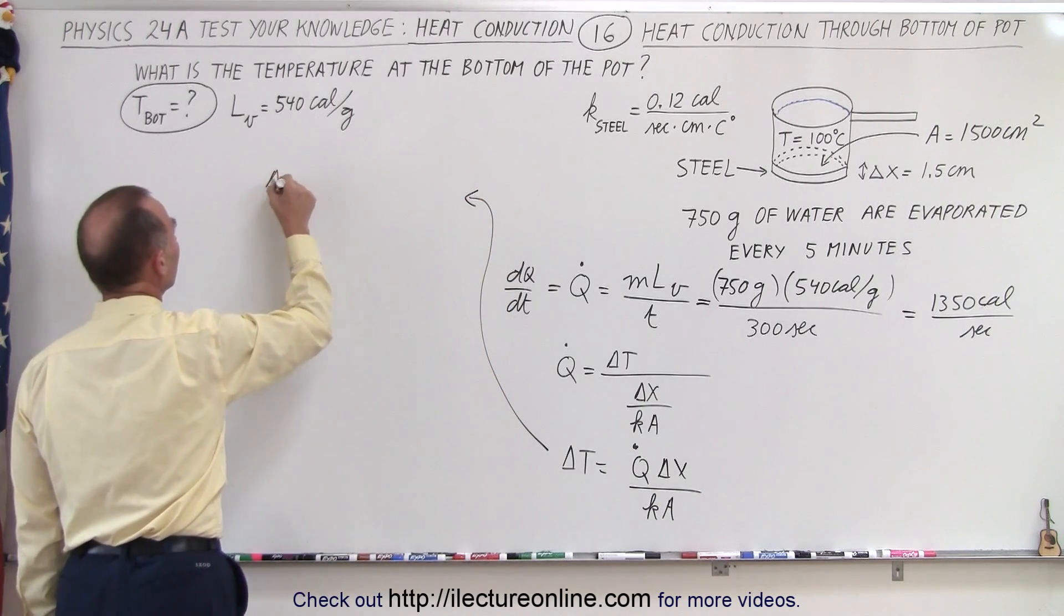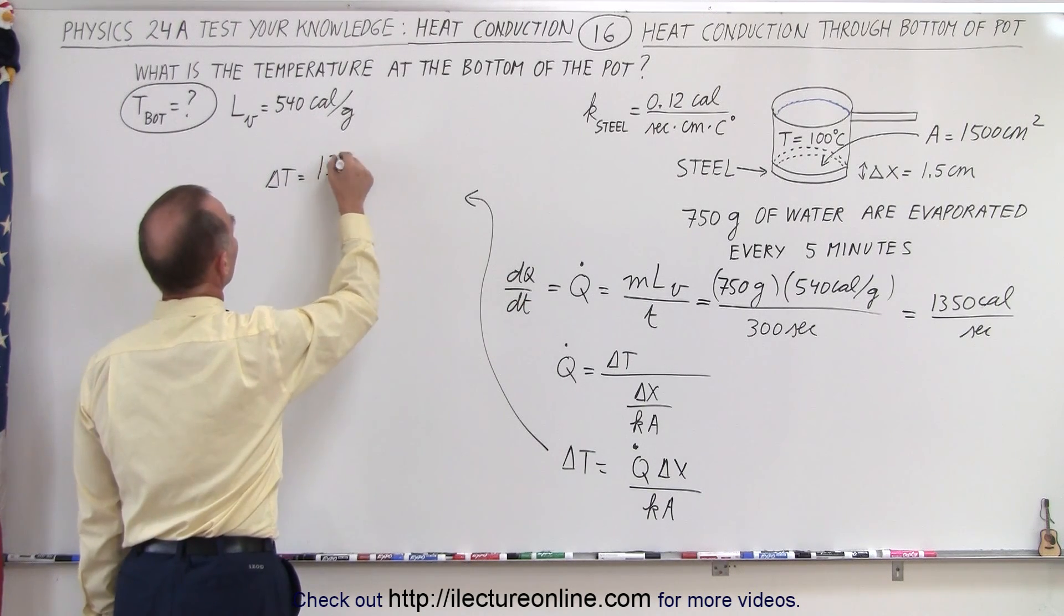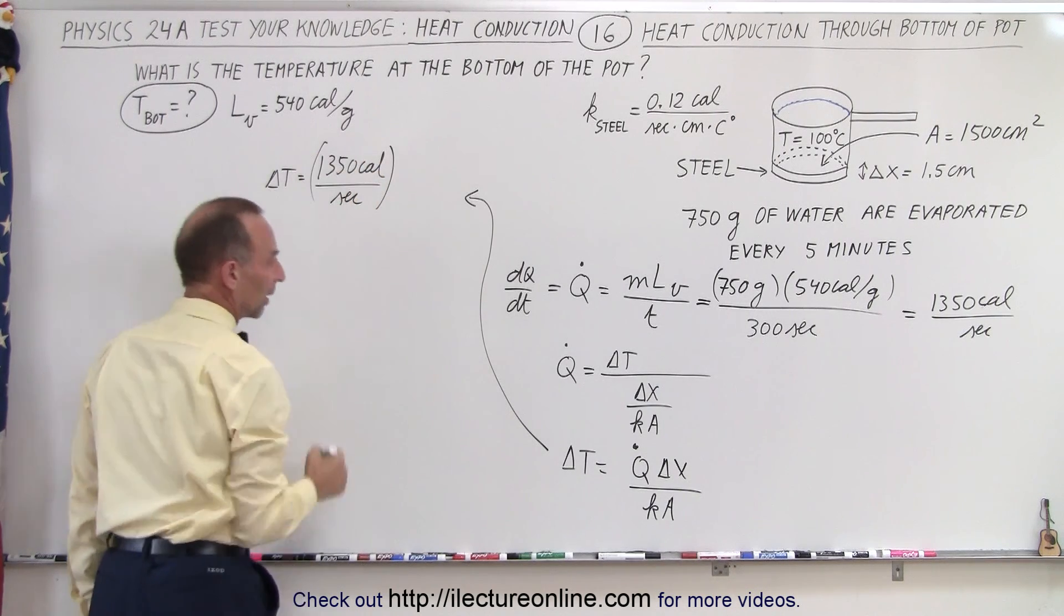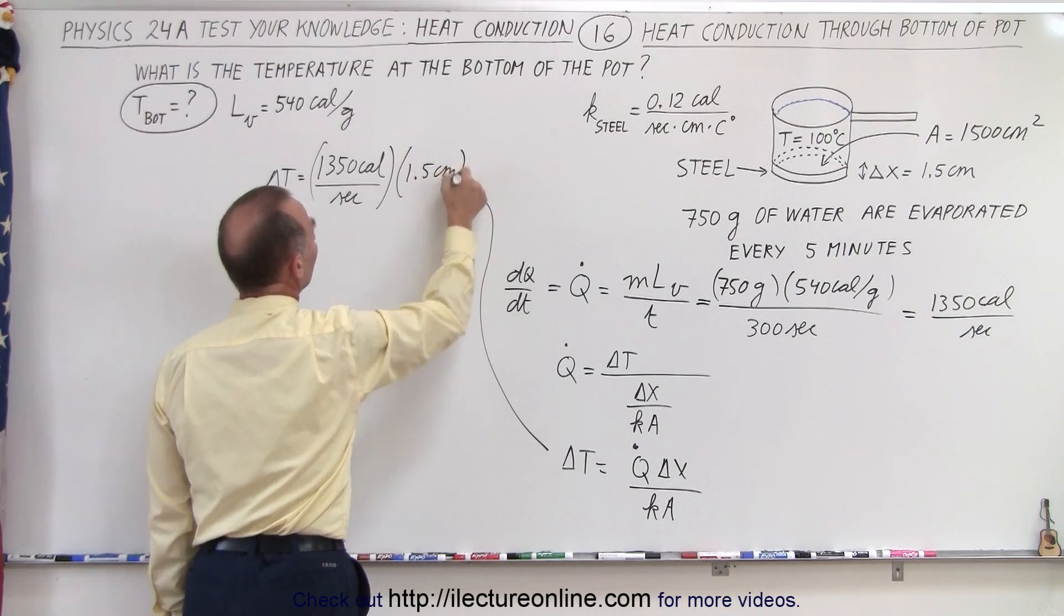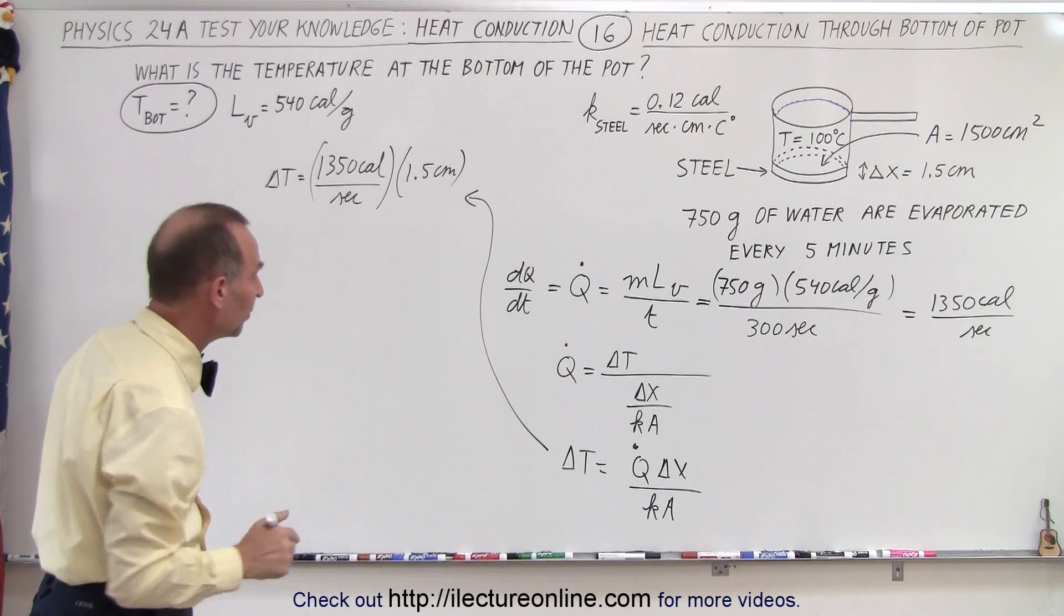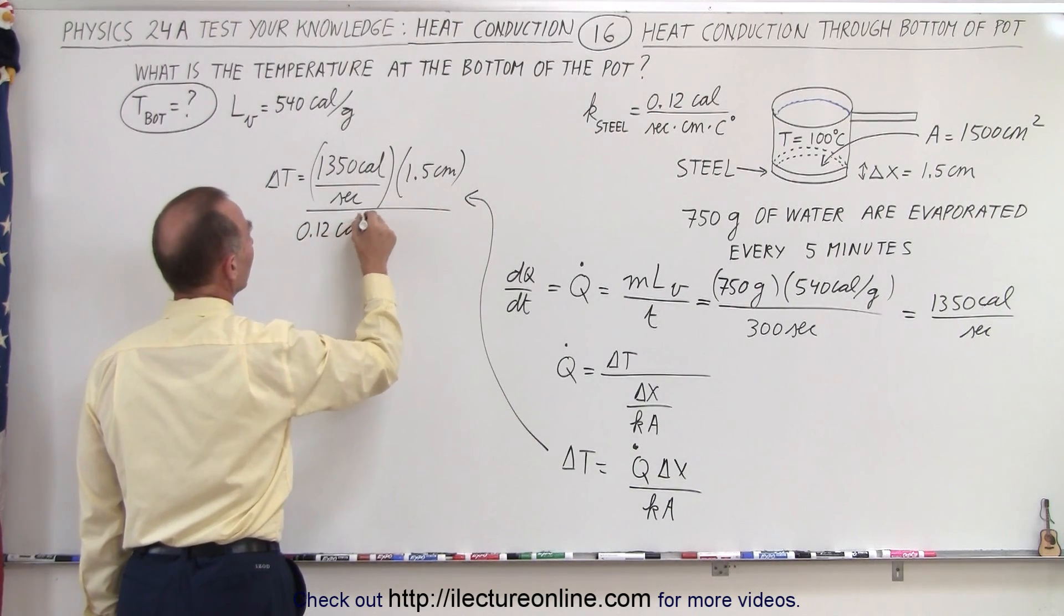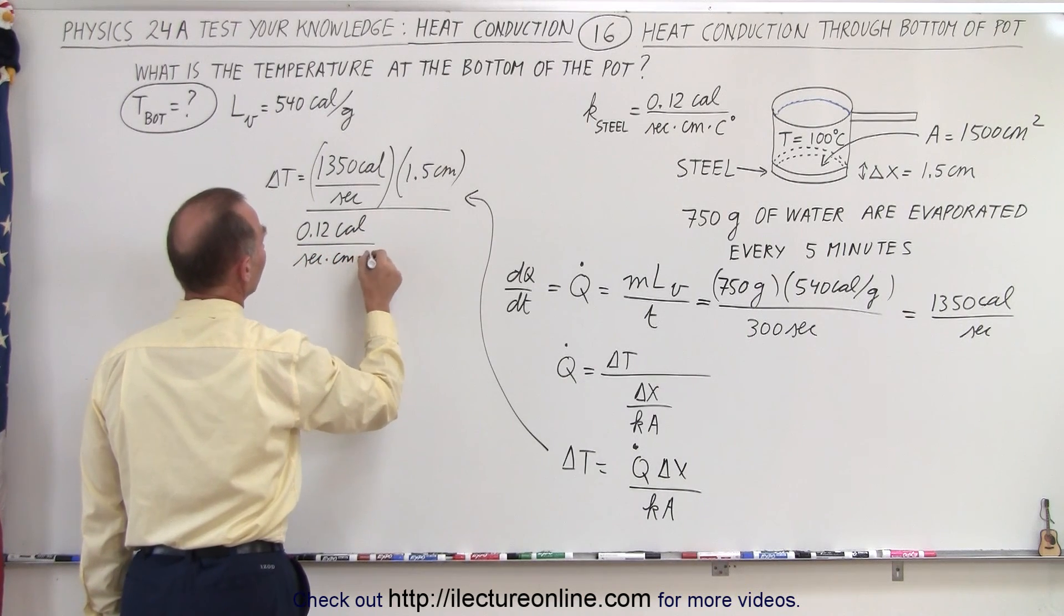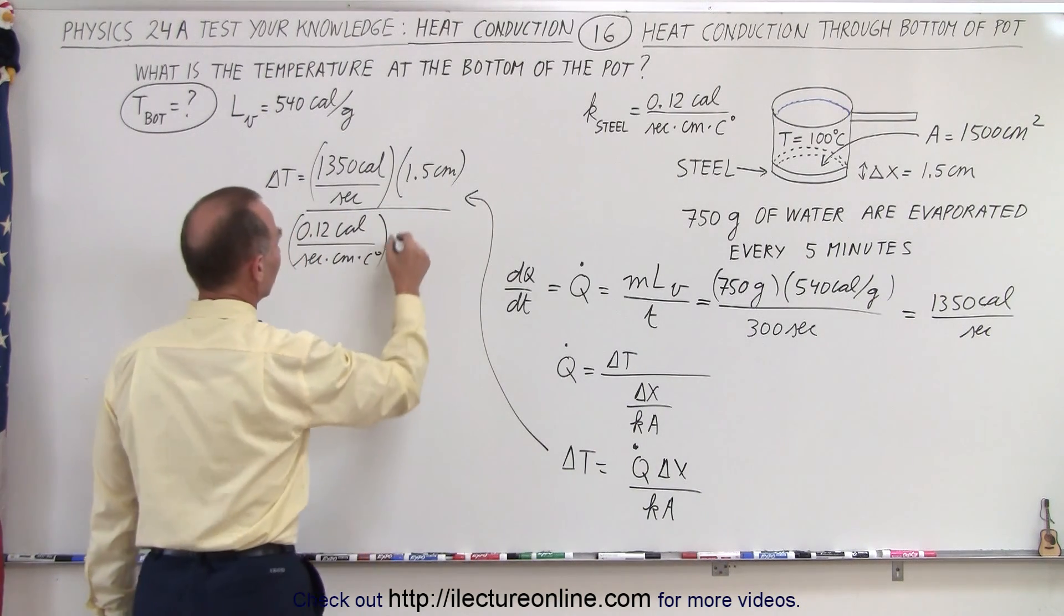So that means that delta t is equal to Q dot, that would be 1350 calories per second. We multiply that times the thickness, which is 1.5 centimeters. And notice, since K is given to us in terms of calories per second per centimeters per centigrade degree, we can leave the thickness in centimeters. So K is going to be equal to 0.12 calories per second times centimeters times centigrade degree. And we multiply it times the cross-sectional area. We said it was going to be 1500 centimeters squared.